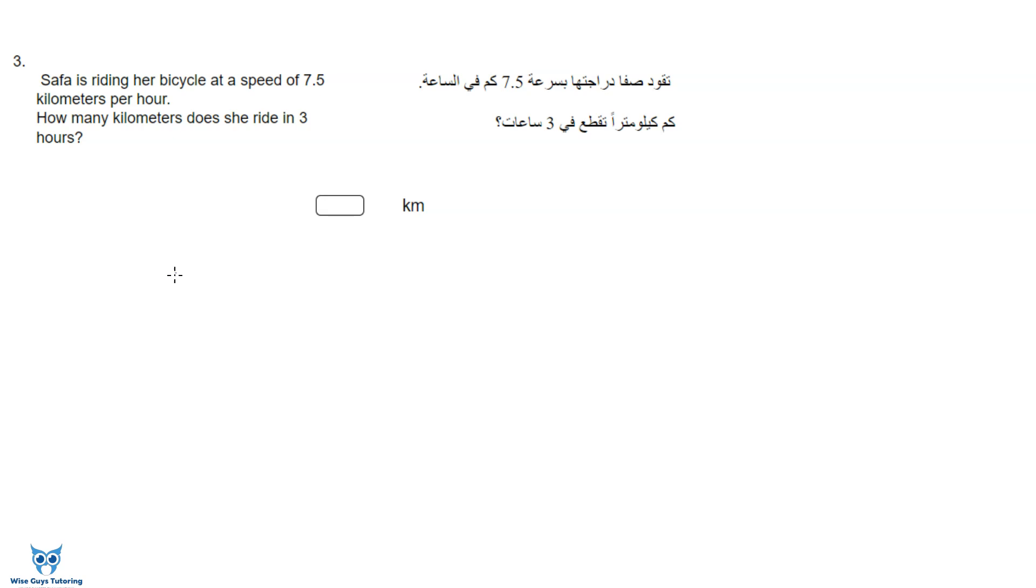So this is a proportion question but we can solve it in two ways with using the speed equation or we can do the proportion. So let's try the proportion first. It says she's riding at a speed of 7.5 kilometers per hour, so if it's 7.5 kilometers in one hour and the question is saying how many kilometers, so we'll call it x, will she ride in three hours. And now you can see that this is a proportion right?